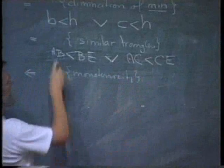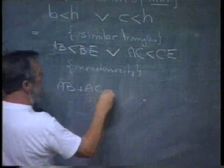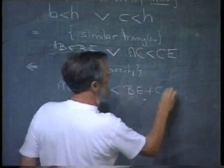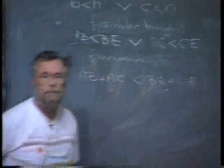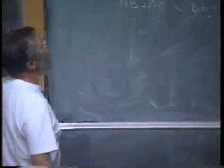This follows from AB plus AC is less than BE plus CE. Okay. So far so good.